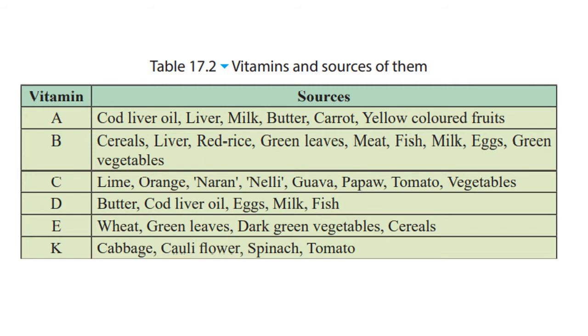Vitamins include Vitamin A, B, C, D, E, and K. Vitamin A sources include fish, milk, eggs, and green vegetables. Vitamin C sources include lime, orange, naran, nelly, guava, pepper, tomatoes, and vegetables.